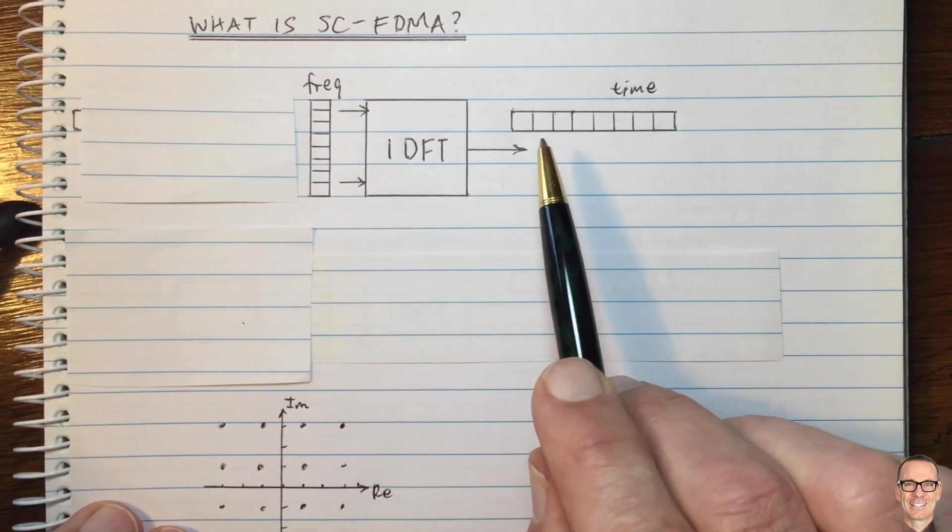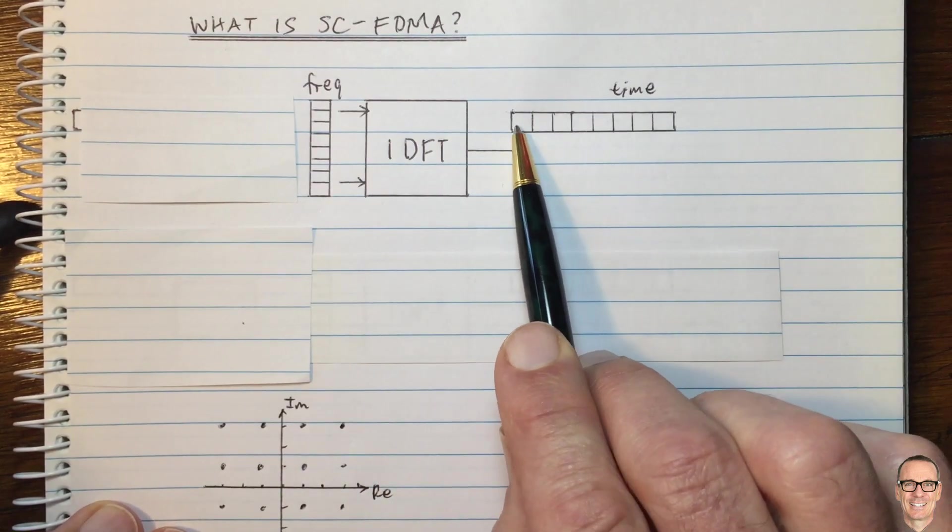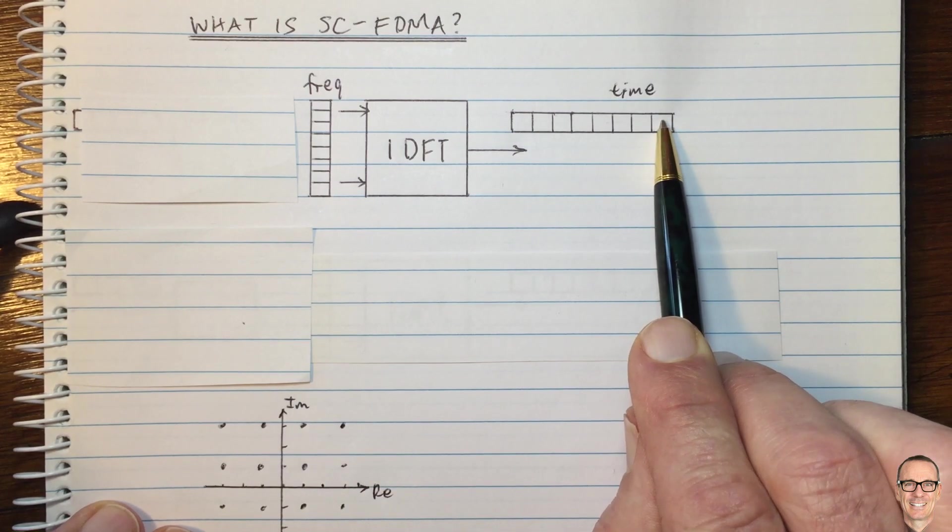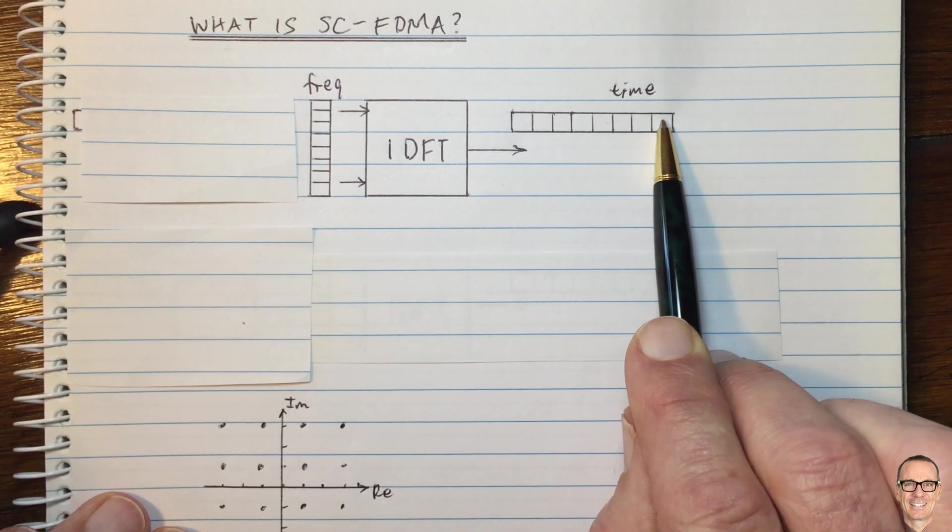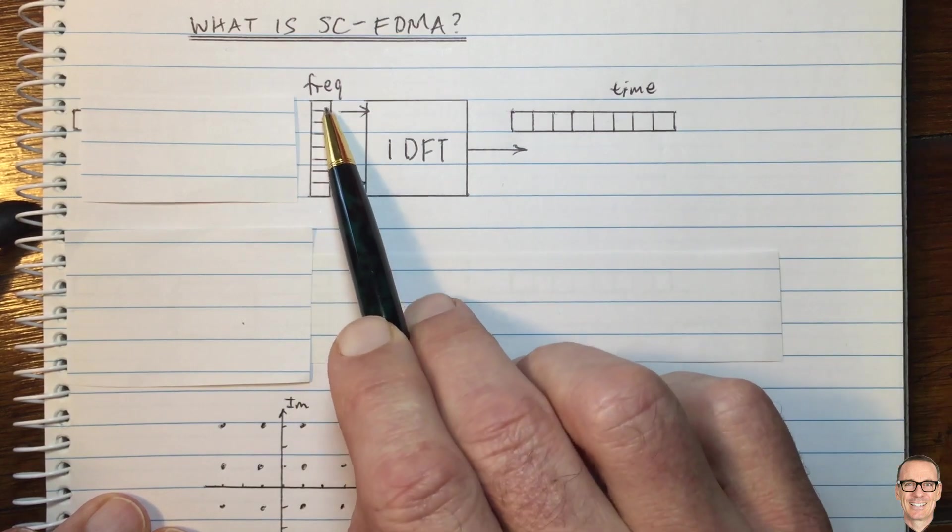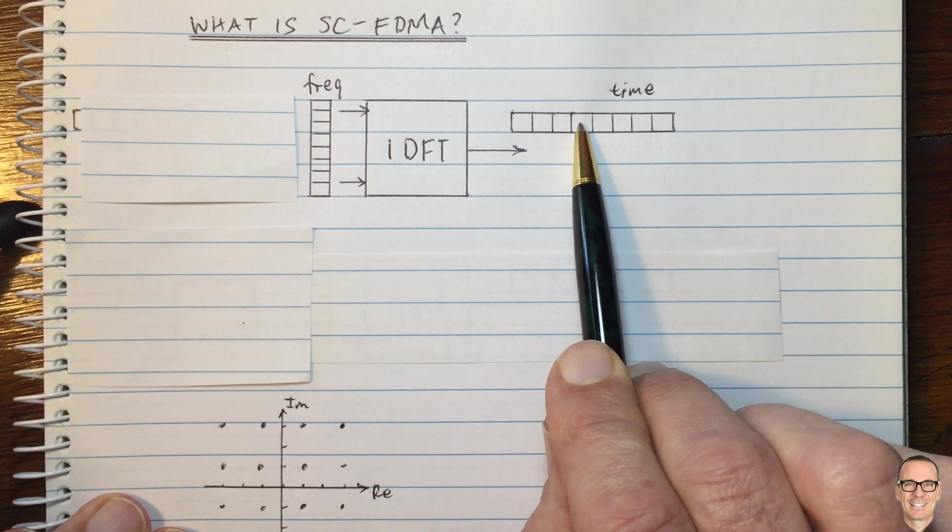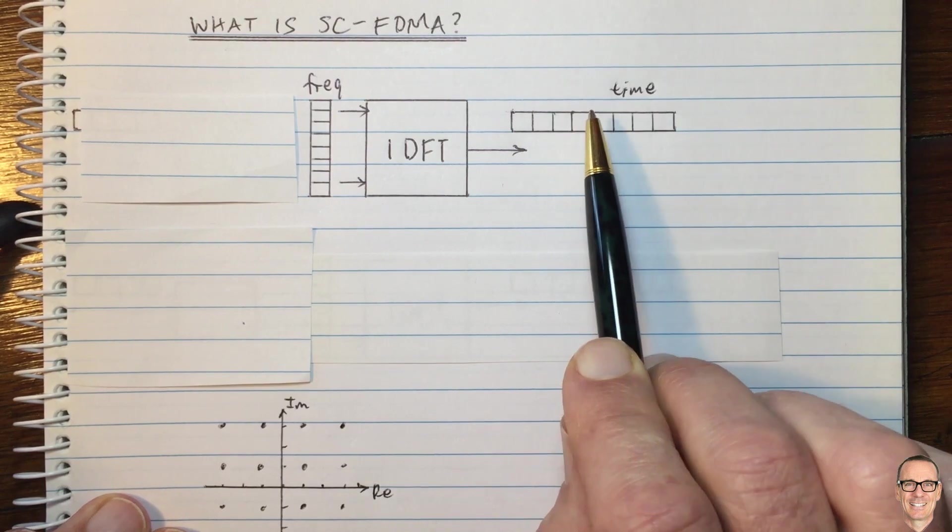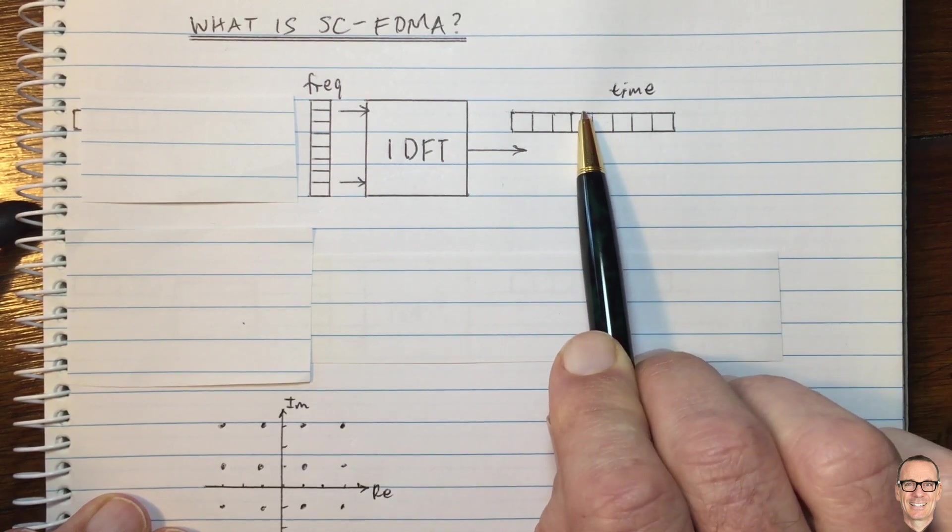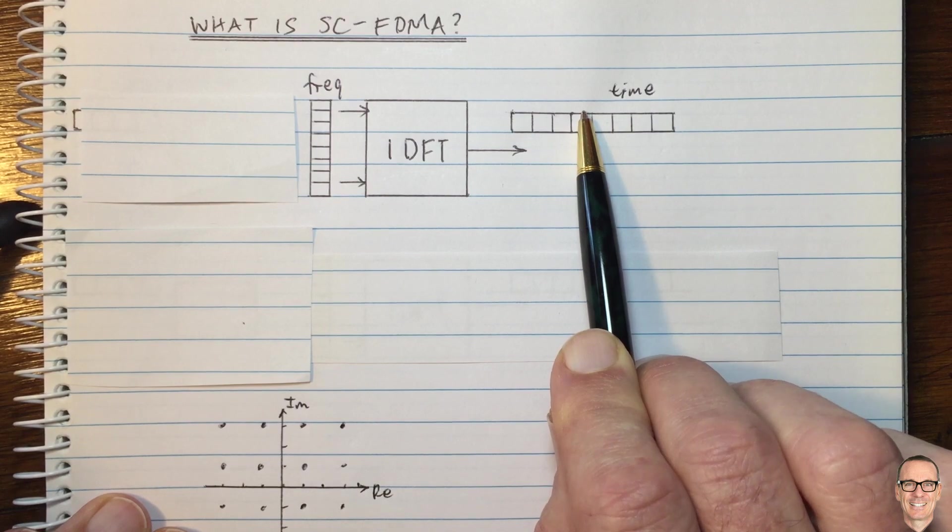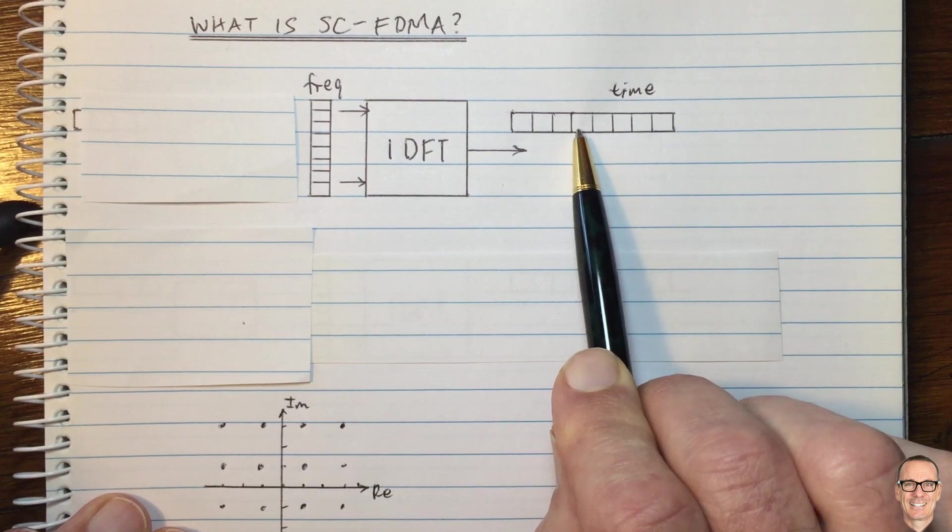But it comes with a problem. And that is that it can be that in the time domain, you have a high peak to average power ratio. Because some of these subcarriers might add up at a certain time, all in phase, giving a high peak power. Again, there's more videos on the channel relating to peak to average power ratio.